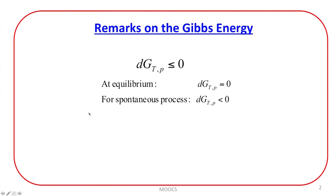That is why most of the time when we say that for spontaneity of the process, let us take a look at the change in Gibbs free energy of the reaction. And if the change in Gibbs free energy of the reaction at constant temperature and pressure is less than 0, then the reaction is spontaneous in that direction.